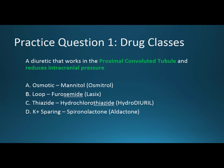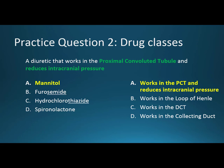Remembering that we go from the glomerulus to the proximal convoluted tubule, the ascending loop of Henle, the distal convoluted tubule, and then the collecting duct — in this case we're talking about mannitol, which works in the PCT and reduces intracranial pressure. This is something we'd use really only in an emergency situation.